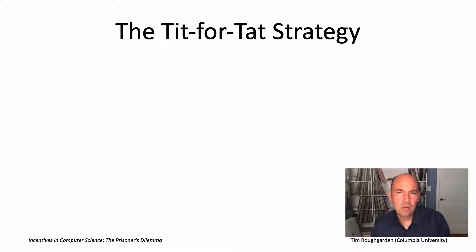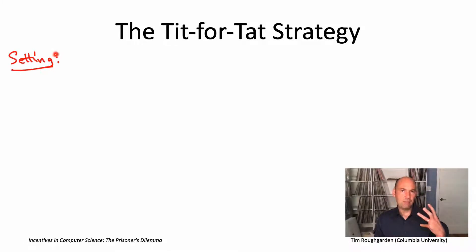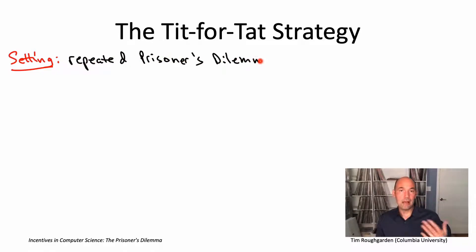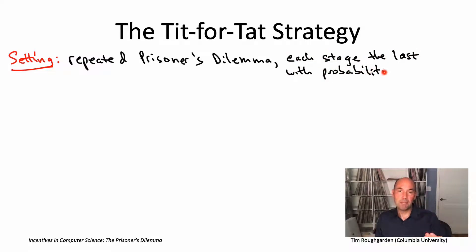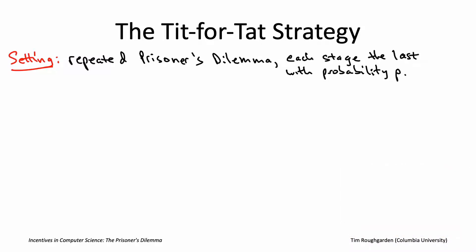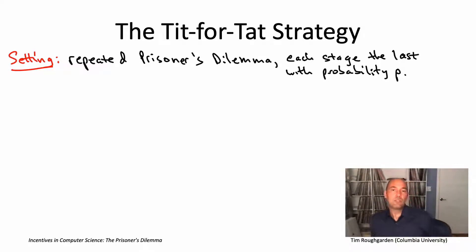Let's pick up where we left off. We're looking at the model of the repeated prisoner's dilemma — Alice and Bob playing prisoner's dilemma over and over again, adding up their payoffs across all of the stages. We're looking at the model where there's a random number of stages, so after each stage there's some probability P that it winds up being the last stage, for example P equal to 5%. The goal is to show that in this model, cooperation is justified.